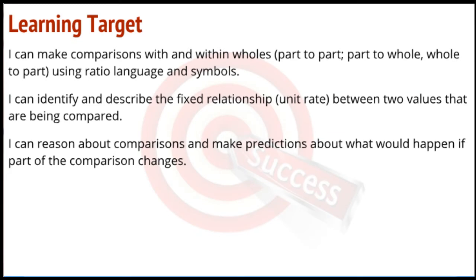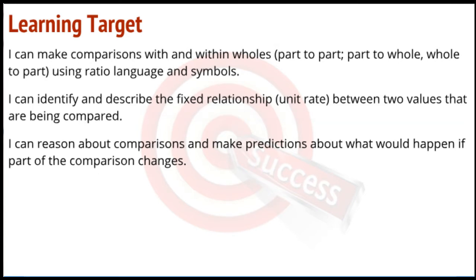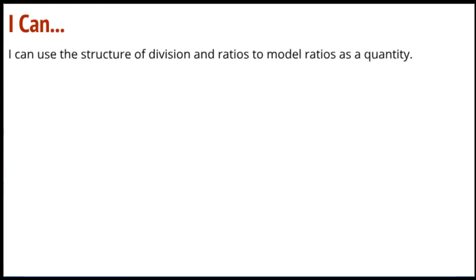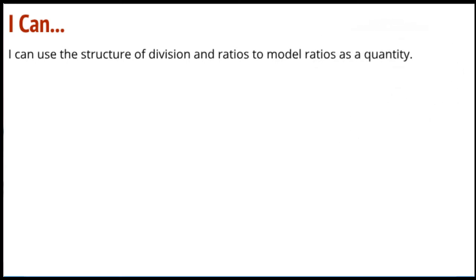So the learning targets here: we are still very focused on this fixed relationship between two values, and of course we can't really do rates without looking at ratios and equivalent ratios. Our goal today — I can use the structure of division and ratios to model ratios as a quantity. We're going to take this five miles divided by two hours and try to put it into some kind of quantity we can work with.